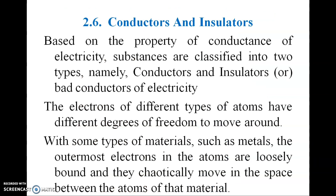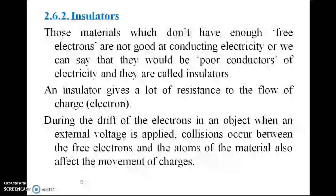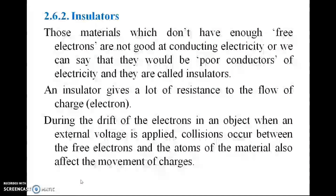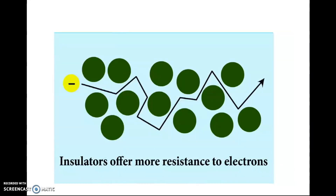Conductors and insulators: different types of atoms have different degrees of freedom to allow electron movement. In materials like metals, the outermost electrons are loosely bonded and can move freely between atoms — these are conductors and offer less resistance to electrons. Materials which do not have enough free electrons are poor conductors of electricity and are called insulators. An insulator gives a lot of resistance to the flow of charge.